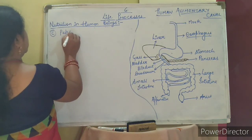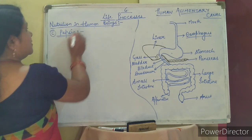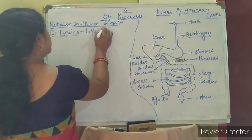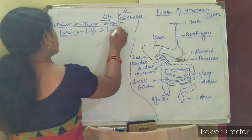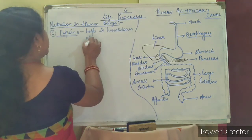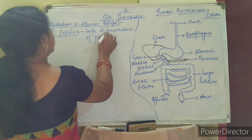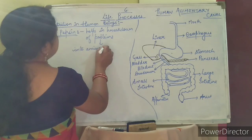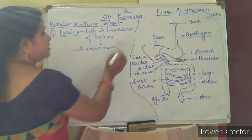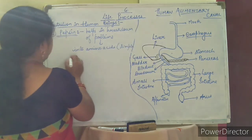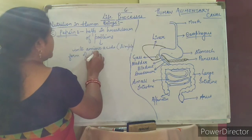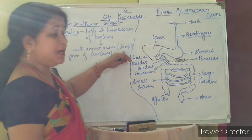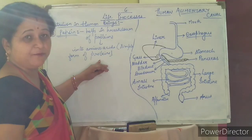The next component is the enzyme pepsin. What is the function of pepsin? It helps in the breakdown of proteins into amino acids. Amino acids are the simple form of proteins — just as glucose is the simple form of carbohydrates.